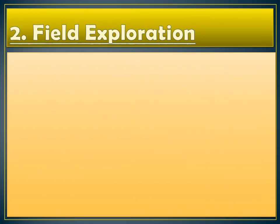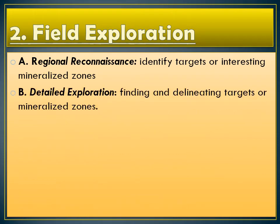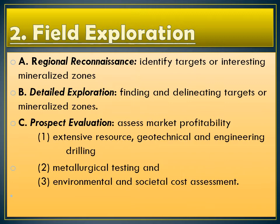The second process is field exploration — literally, you will go and explore the field. This stage has three phases. First is the regional reconnaissance, where the main objective is to identify targets or interesting mineralized zones covering a relatively large area. After identifying a large area, you can proceed to detailed exploration, which involves more detailed surface and subsurface activities with the objective of finding and delineating targets or mineralized zones. After that, you have prospect evaluation, which assesses market profitability through extensive resource, geotechnical, and engineering drilling to test samples.